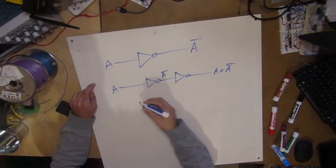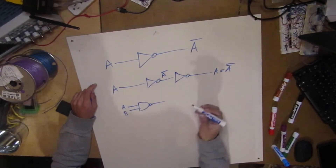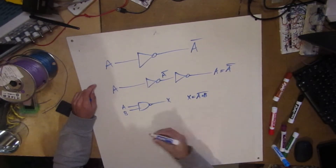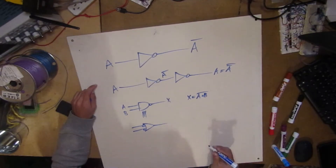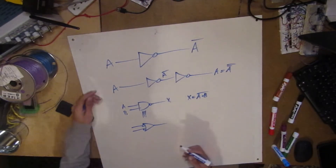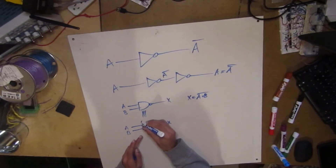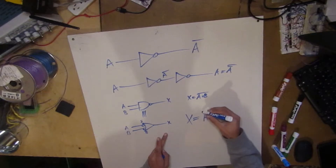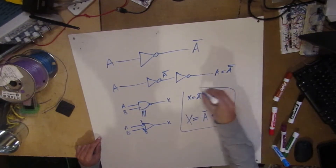What about De Morgan's theorem? Let's say De Morgan's theorem: we have an AND gate with A and B and output X. So X is just equal to A AND B, all barred. But De Morgan's theorem says that this is equivalent to an OR gate where zeros become ones and ones become zeros. So what's coming in is A bar plus B bar, and that gives us X.